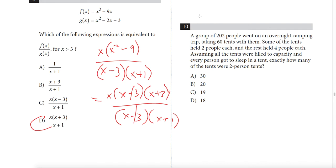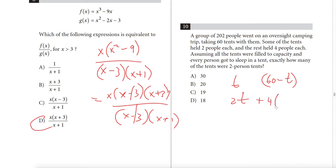Question 10: a group of 202 people went camping with 60 tents. Let t = number of two-person tents; then 60 − t is the number of four-person tents. So 2t + 4(60 − t) = 202. That gives 2t + 240 − 4t = 202, so −2t = −38, meaning t = 19. Answer: C.